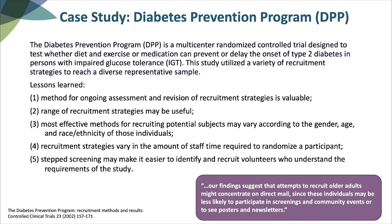The program looked at recruitment approaches, how they performed, and their cost to find the ones that were most effective. Some lessons learned were that it's important to employ methods for ongoing assessment and revision of recruitment strategies as needed. A range of recruitment strategies may be useful. The most effective methods for recruiting potential subjects may vary according to gender, age, and race/ethnicity. Some recruitment strategies require more or less time on the part of staff to randomize a participant, and stepped screening may make it easier to identify and recruit volunteers who understand the requirements of the study. One DPP investigator found that attempts to recruit older individuals might need to concentrate on direct mail, since these individuals may be less likely to participate in screenings and community events, or to see posters, newsletters, or emails.